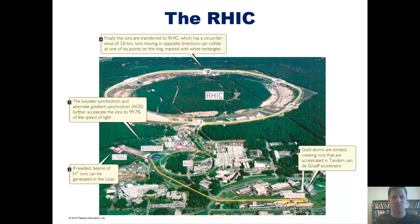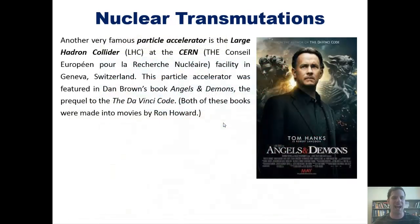Anyway, as promised, I want to talk about another very famous particle accelerator called the Hadron Collider. The Hadron Collider, often called the Large Hadron Collider, or LHC, is located at CERN, which is the Conseil Européen pour les Réces Nucléaires. Yeah, I think that's maybe French or something. I can't really pronounce it because I don't speak that language. Anyway, it's a facility located in Geneva, Switzerland. This particle accelerator, just so you know, was featured in Dan Brown's book Angels and Demons, the prequel to The Da Vinci Code. Now, both of these books were made into movies by Ron Howard, and this is a movie poster of that one.